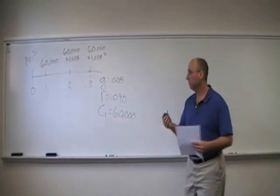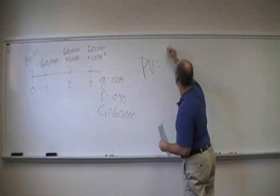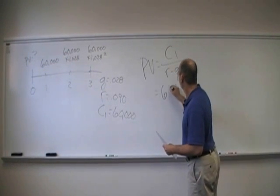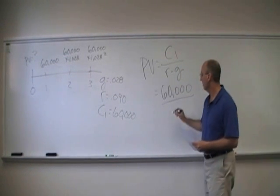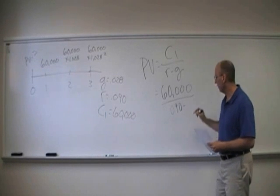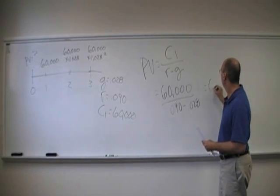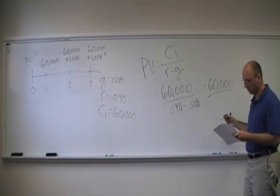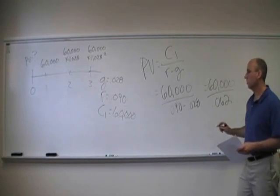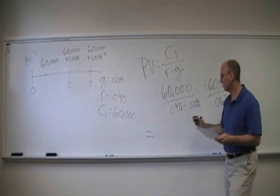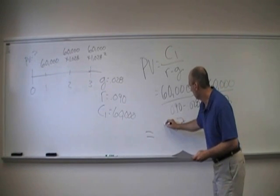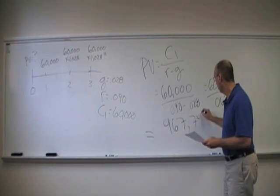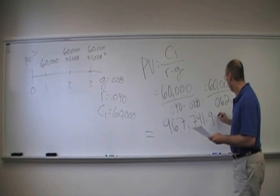With a growing perpetuity, present value is simply equal to C1 over R minus G: $60,000 over 0.090 minus 0.028. That gives us $60,000 over 0.062, and so Danny's t-shirt shop is worth $967,741.94.